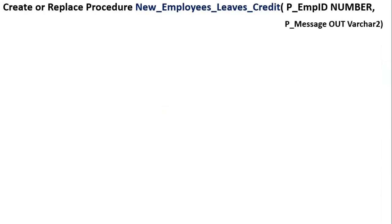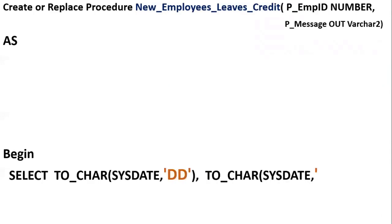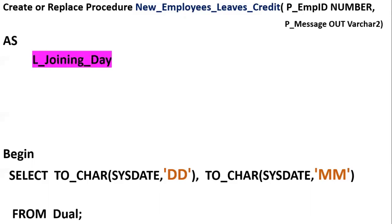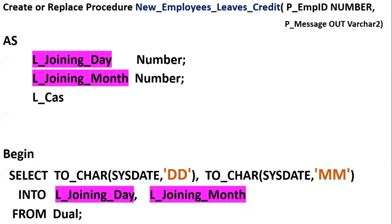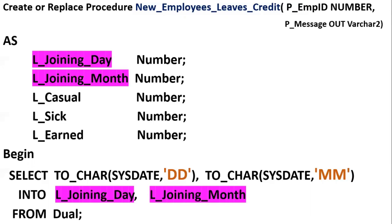We start building the requirement using a procedure: CREATE OR REPLACE PROCEDURE with a procedure name, one input parameter for employee ID, and one output parameter for success or failure. We are extracting the day of the month and the number of the month, and these values are stored in two local variables: L_joining_day and L_joining_month, both numbers. We then assign using SELECT INTO, and declare three more local variables — L_casual, L_sick, and L_earned — for storing the calculated leave values.